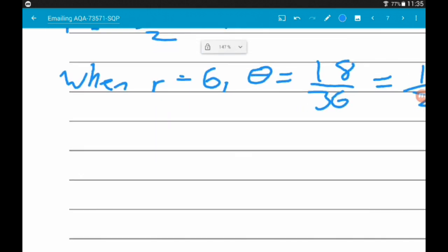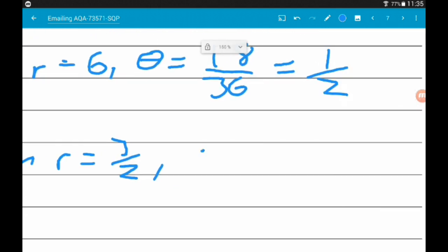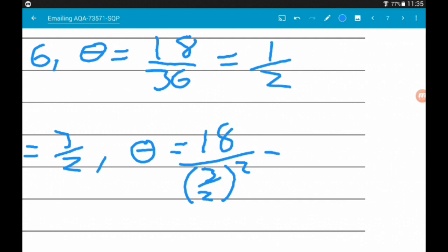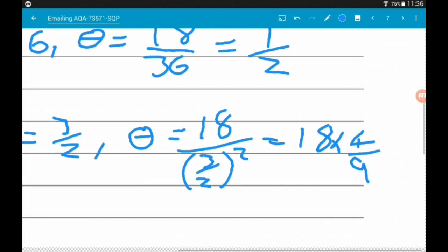Now, when R = 3/2, θ = 18/(3/2)², which is the same as 18 × 4/9, which is going to be 72/9, which is 8.